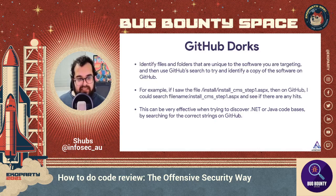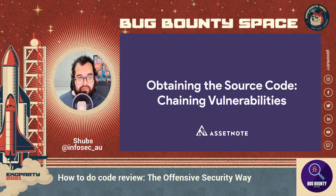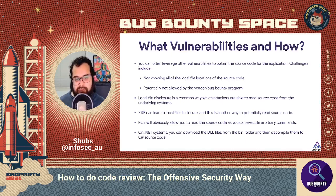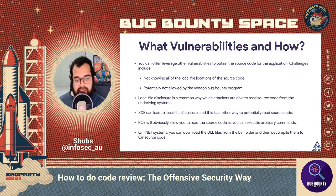One other way of obtaining software is chaining vulnerabilities — leveraging other vulnerabilities to obtain the source code. Challenges include not knowing all local file locations and some vendor or bug bounty programs not allowing this. Local file disclosure is one of the easiest ways to read source code from underlying systems. External entity injection can also lead to local file disclosure, and remote command execution lets you read and execute arbitrary commands. On .NET systems particularly, you can download DLL files from the bin folder and decompile them to C# source code.